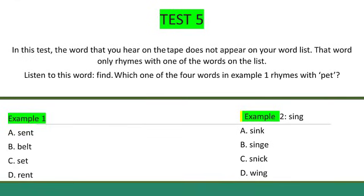Example 2. Listen to this word: sing. Which of the four words in example 2 rhymes with sing? The correct word is wing. The other words do not rhyme with sing. The letter written against wing is D, and this is recorded by shading answer space D against number 2. Now get ready to answer the rest of test 5 on your answer sheet. Start at number 35.